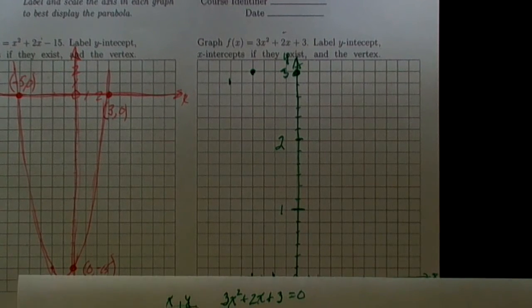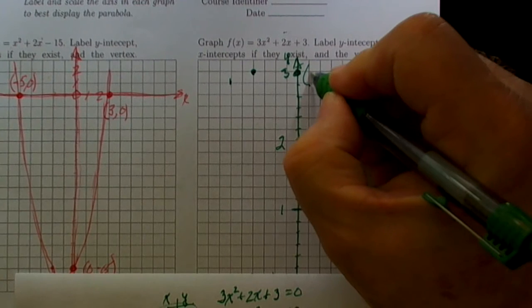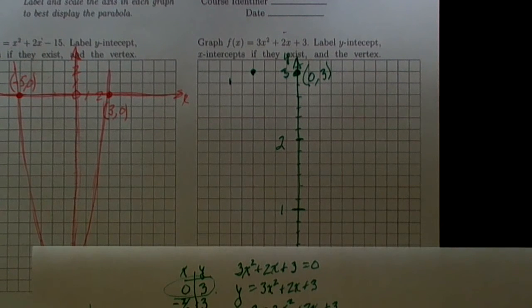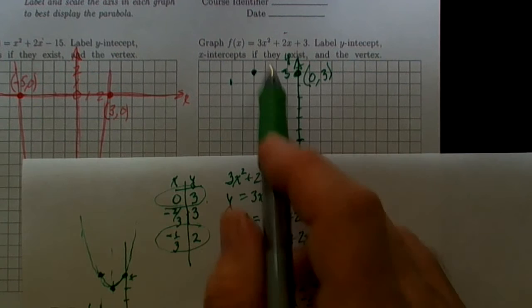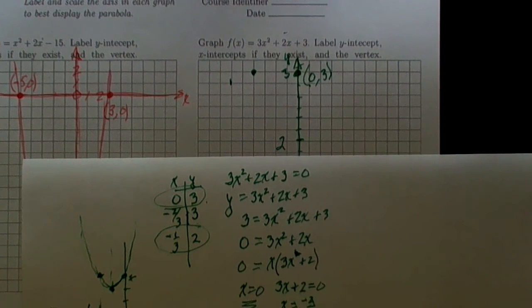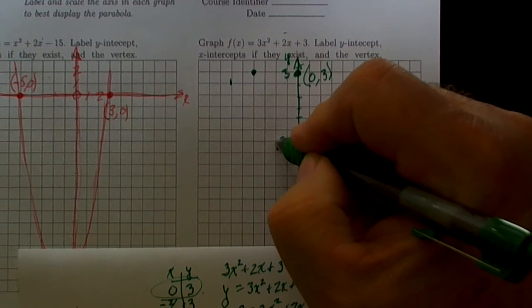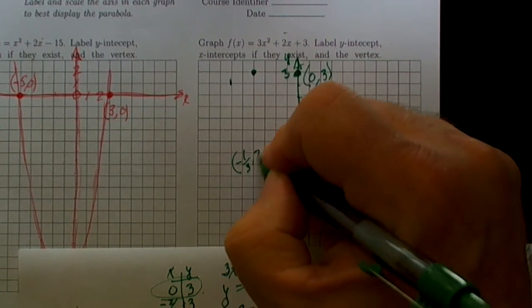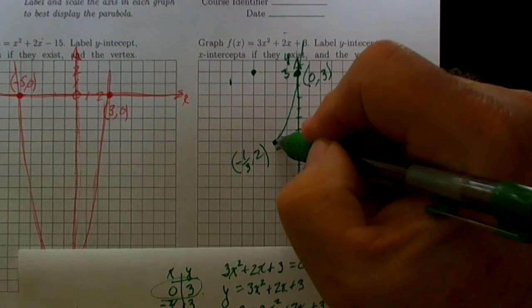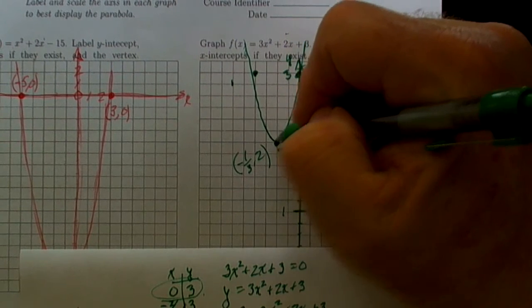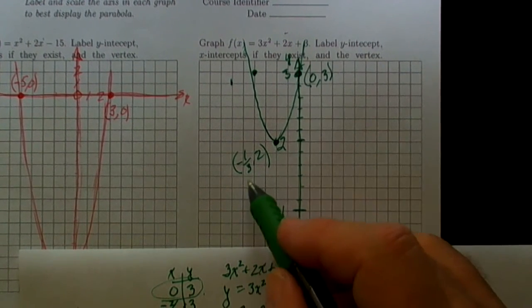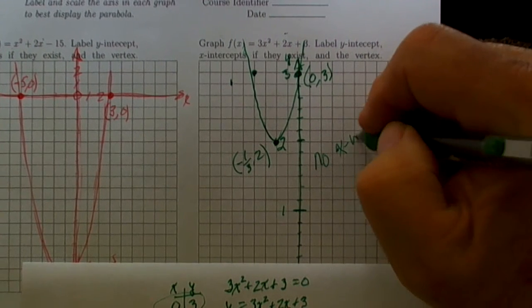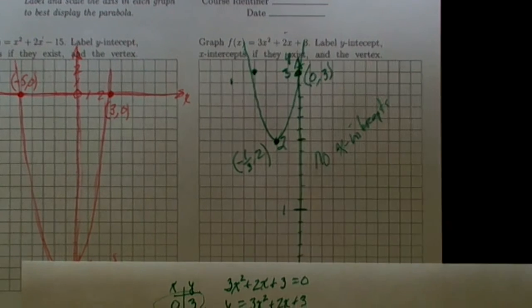I found those two points. This one is important to label because we were supposed to label the y-intercept 0, 3. The vertex had to be halfway between here, that would be at minus 1/3 and it will be up at 2. So at that point minus 1/3, 2. The parabola is coming up like this. We've labeled the y-intercept, we've labeled the vertex, and there are no x-intercepts in this particular problem.